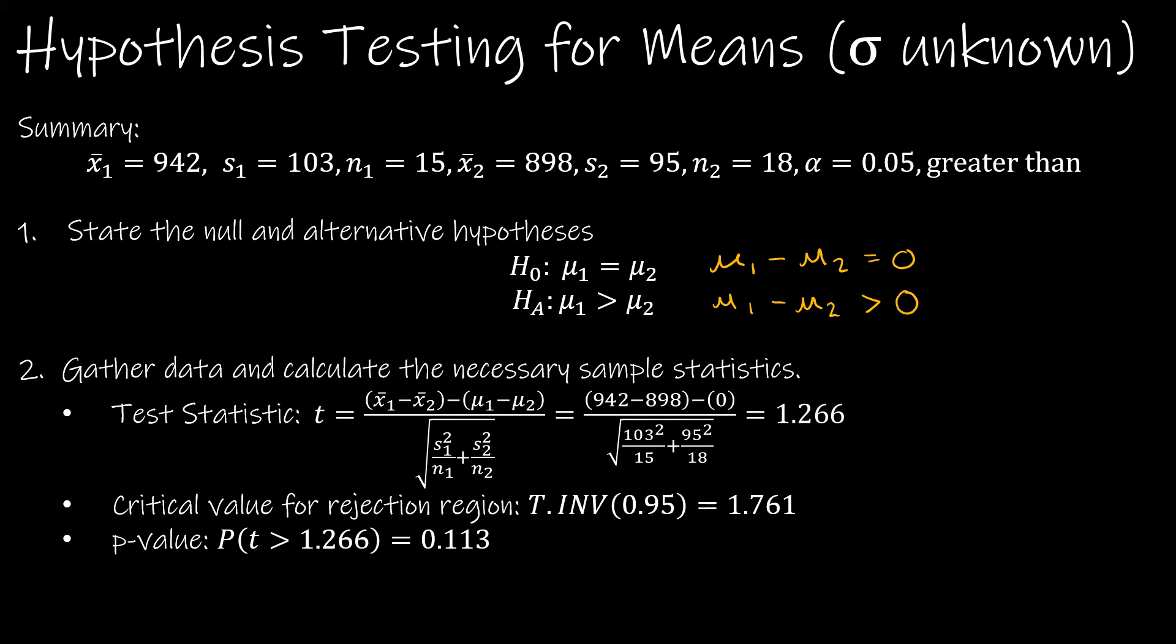Our test statistic. The reason I say this is because it helps us to know what value to put for mu one minus mu two. So to find my T score, I'm subtracting 942 and 898 and then subtracting what I expect the difference to be, which in this case is zero. And then same denominator as our last video, except that we're using s1 and s2 instead of sigma one and sigma two. Again, we get 1.266.